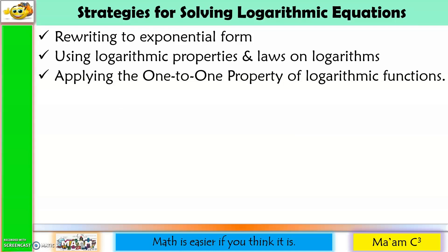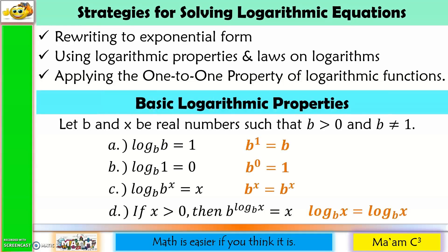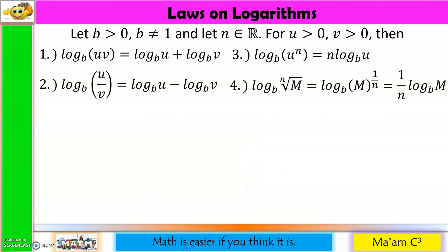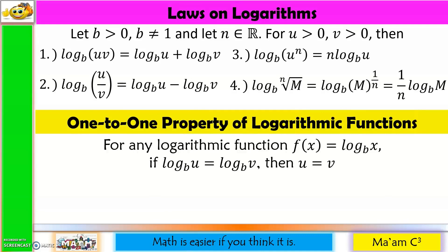Here are the strategies for solving logarithmic equations: 1. Rewriting to exponential form. 2. Using logarithmic properties and laws on logarithms. And 3. Applying the one-to-one property of logarithmic functions. Here are the basic logarithmic properties and the laws on logarithms. The one-to-one property states that for f(x) = log base b of x, if log base b of u equals log base b of v, then u equals v. So if our bases are the same, then u and v are equal.